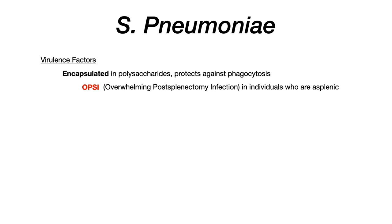The other virulence factor is IgA protease. IgA protease, as the name implies, cleaves mucosal IgA. Recall that in the mucosal areas of the body, IgA is located there to help fend off infections. So it shouldn't be surprising that Strep pneumoniae can cause MOPS — M-O-P-S: meningitis, otitis media (particularly in children), pneumonia, and sinusitis. All of these infections involve mucosal interfaces — the sinuses, lungs, ears, and brain all have mucosal surfaces — so the IgA protease makes Strep pneumoniae highly likely to infect through these routes.